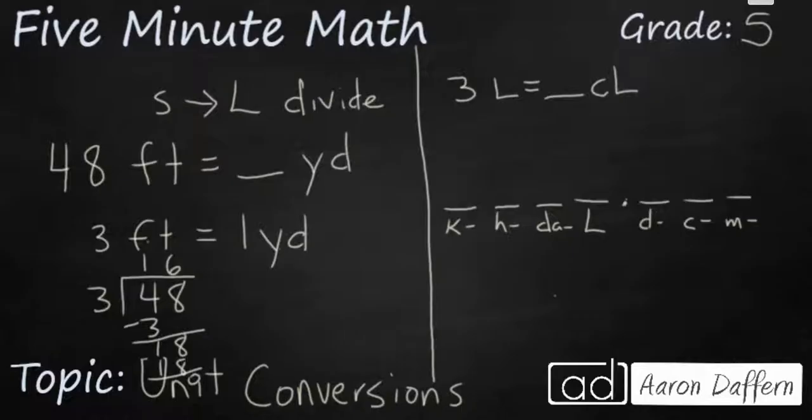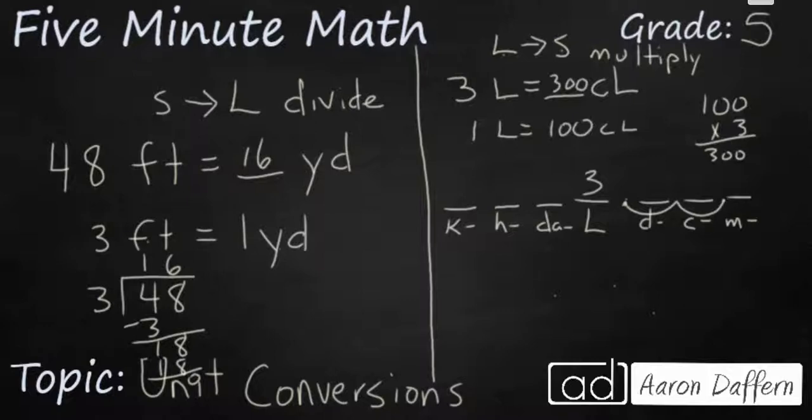For our first problem you need to know that 3 feet make 1 yard and you're going from a smaller unit to a large unit which means divide. And so 48 divided by 3 is 16 yards. On the next problem 1 liter is 100 centiliters. That's large to small. So that's multiplied up to 300 centiliters. Or if you put the 3 in the liters place you move the decimal place over twice to the centiliters and you get 300.